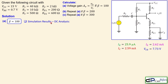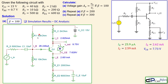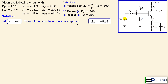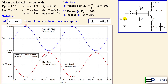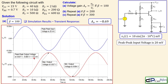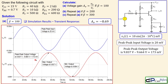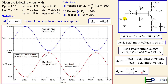Looking at the SPICE simulation results for beta equals 100: the DC operating point matches our calculations very closely. In the transient response, the blue line is the input at 10 mV peak at 10 kHz, and the red line is the output showing phase inversion. The peak-to-peak output voltage is 173 mV, giving a measured gain of minus 8.65 — very close to the calculated minus 8.69.